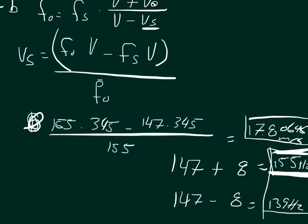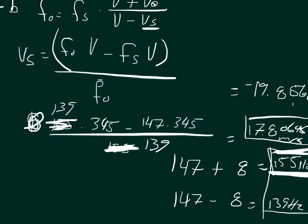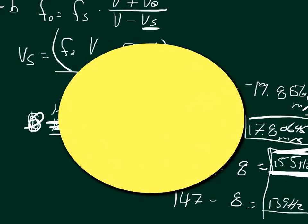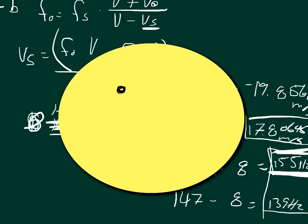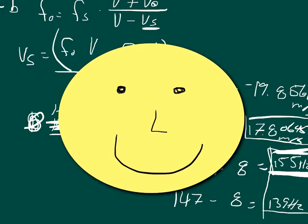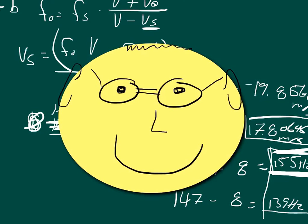We can plug in the same thing, only we'll cross out 155, we'll put in 139. Cross out 155, plug in 139. In this case, you would get a velocity of the source equal to negative 19.8561 meters per second. Since it's negative, we know that the source is moving away from the observer. So you get 19.8561 meters per second moving away from the station.